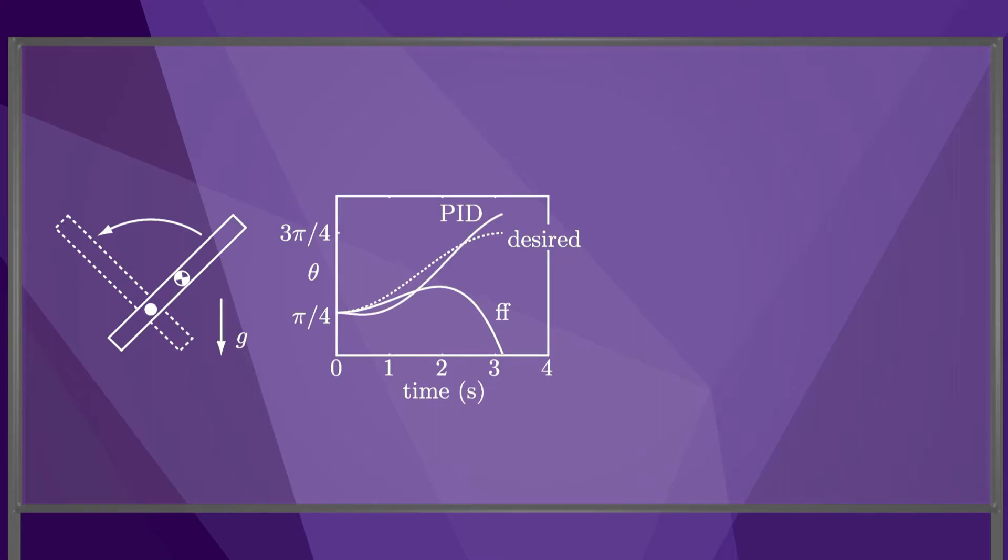We could instead try a PID controller with no dynamic model. Finally, we could try computed torque, which provides better tracking than either of the other two controllers.